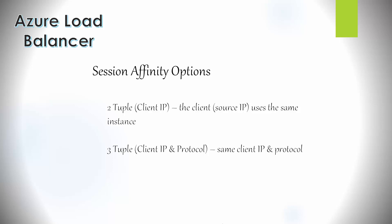Looking further at session affinity options: there is the two-tuple (client IP), where the same source IP address keeps sending traffic to the same instance. Then there is the three-tuple (client IP and protocol), where the same client IP and same protocol — such as HTTPS — are used together. This three-tuple option resolves certain issues, such as with the Remote Desktop Gateway, which requires the same source IP and protocol to work.